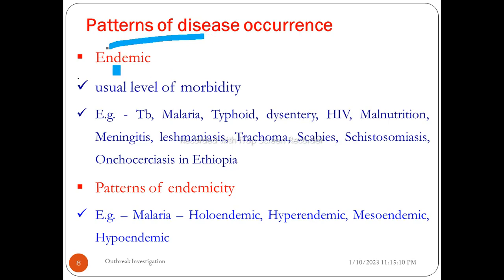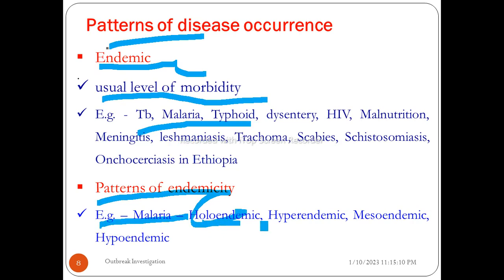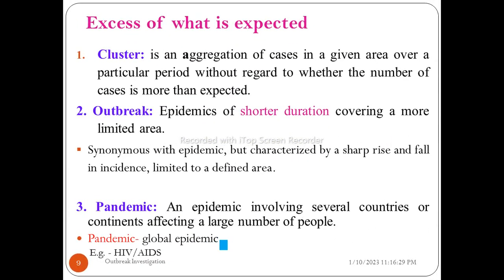This is the usual level of morbidity, which includes diseases such as malaria, typhoid, dysentery, malnutrition, trachoma, schistosomiasis, and onchocerciasis. The patterns of endemicity include holoendemic, hyperendemic, mesoendemic, and hypoendemic. When disease occurs in excess of what is expected, we have cluster, outbreak, pandemic, and epidemic.